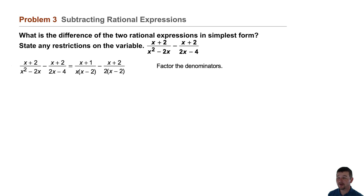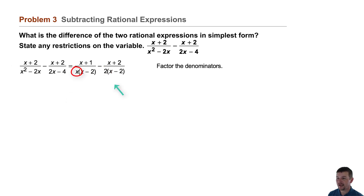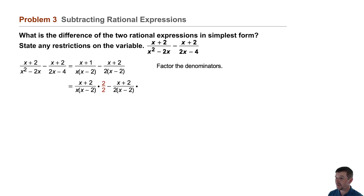Considering the denominators in their factored form, we note that the denominator on the left is missing a factor of 2, and the denominator on the right is missing a factor of x. So to establish a common denominator, we multiply the expression on the left by 1 written as 2 over 2, and the expression on the right by 1 written as x over x.